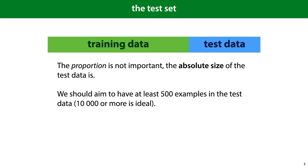Instead, we withhold some data, and that data is called the test set. We train our model on the training data and then we compute its performance on the test data. In some cases, the dataset comes pre-split into a canonical training and test set. If not, you have to split it yourself. The absolute size of the test data is what's important — the test data should contain at least 500 examples, but 10,000 or more is ideal. Once you've split off a test set with enough examples, the rest is the training data.